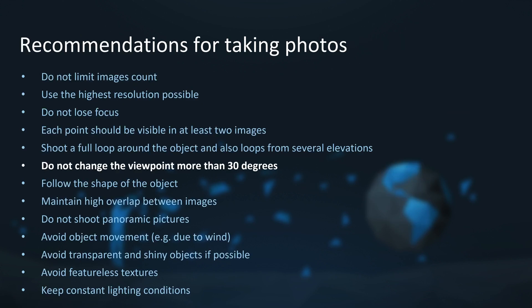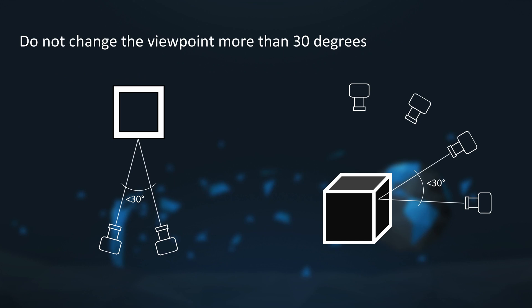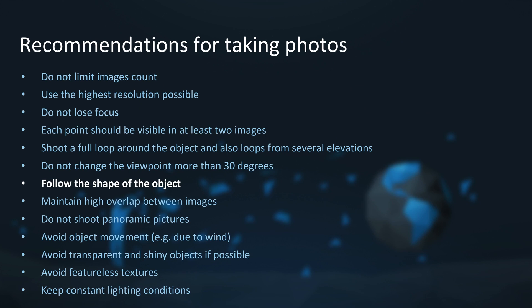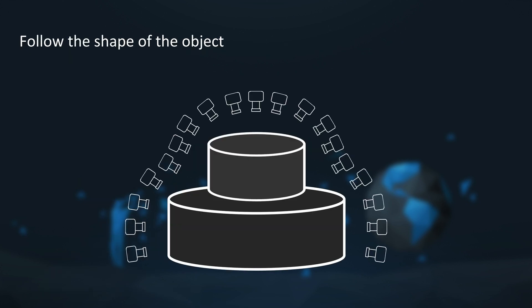Do not change the viewpoint more than 30 degrees. The smaller the angle among neighboring cameras the better, so you can move around the object in even smaller increments. The complexity of the scanned object can play a role in this. Follow the shape of the object and try to keep approximately the same distance from the object surface — this is important to maintain the same level of detail. You can use some support loops a little bit further away from the object to help the alignment, and disable them for meshing and texturing later in RealityCapture.